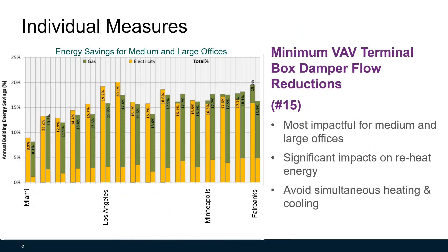This chart shows energy savings for medium and large offices for a minimum VAV terminal box damper flow reduction strategy. The annual building energy savings on average is almost 15 to 20 percent, which is very significant. This strategy is most impactful for medium and large offices and has a significant impact on reheat energy.